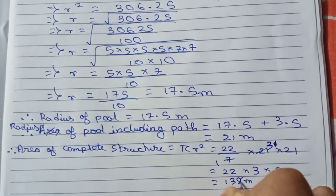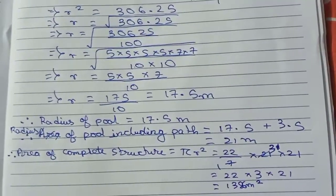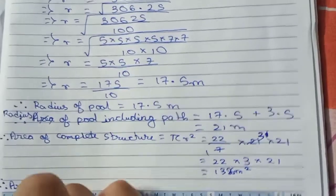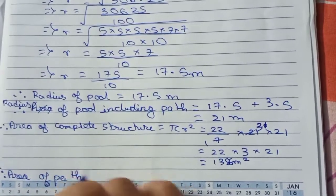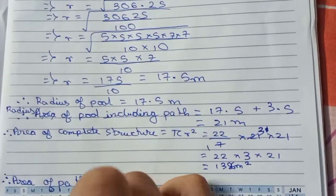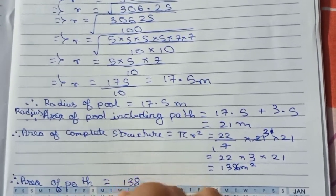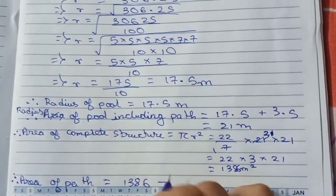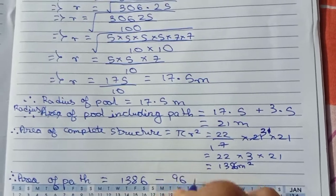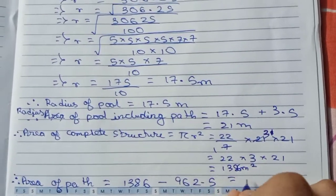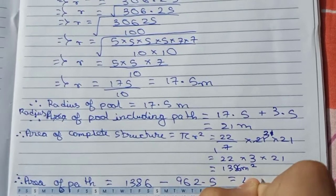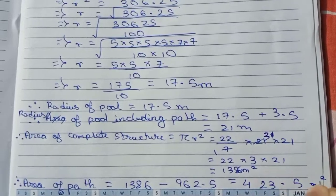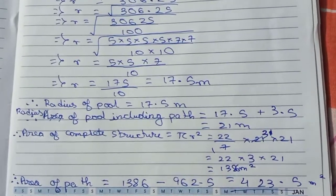So now therefore we find the area of the path. The area of path equals the area of the complete structure minus the area of the pool, that is 1386 minus 962.5, which equals 423.5 meter square. So this is the area of our path — this is our final answer.